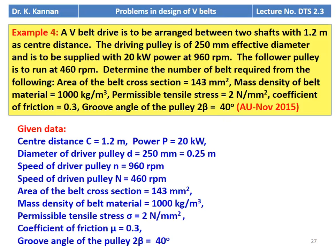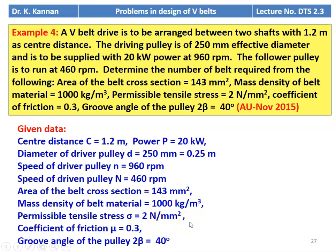We write down the given data. Center distance C = 1.2 m, power = 20 kW. Diameter of driver pulley d = 250 mm = 0.25 m. Speed of driver pulley n = 960 RPM. Speed of driven pulley N = 460 RPM. Area of belt cross-section = 143 mm². Mass density = 1000 kg/m³. Permissible tensile stress σ = 2 N/mm². Coefficient of friction μ = 0.3. Groove angle 2β = 40°.